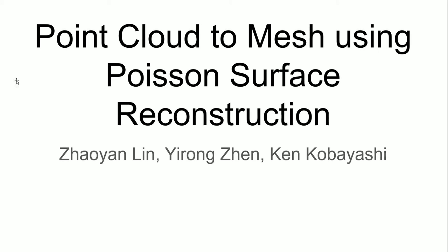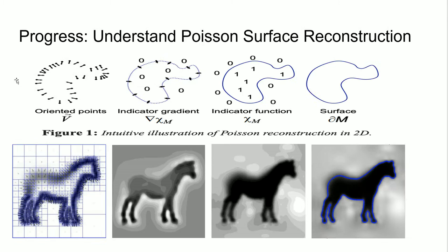Hello, this is Ken and I will be quickly going over our progress of the point cloud to mesh using Poisson surface reconstruction. So far we have taken a set of points from the Stanford library and converted them into a point cloud with orientation, with normals.